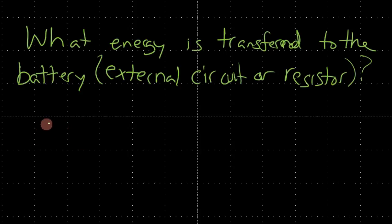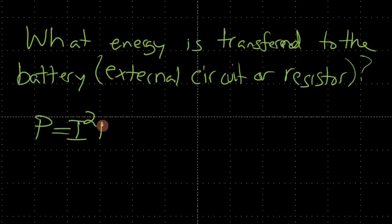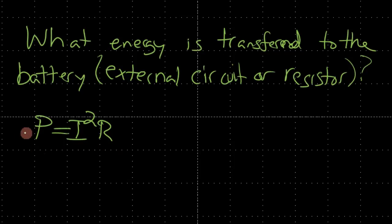The power dissipated in the resistor is equal to I squared times R, where I is the current and R is the resistance. If we determine the current as a function of time, we can then get the power. Power is energy U over time T.